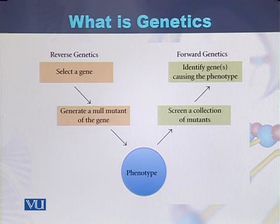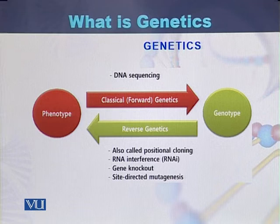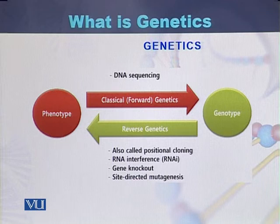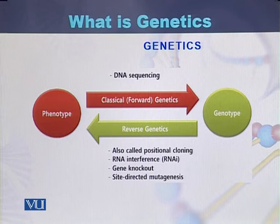So there are two ways of studying genetics: reverse genetics and forward genetics. Studying genotype based on phenotype is called classical genetics or forward genetics, and it is usually performed by sequencing the DNA. In reverse genetics, the phenotype is identified based on the genotype.